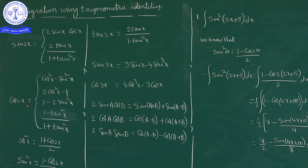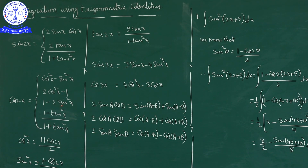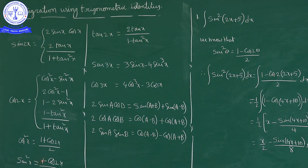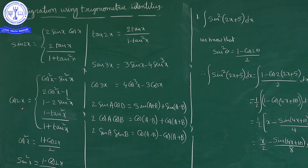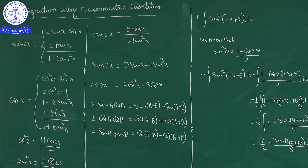Similarly, cos 2x in terms of sine is 1 minus 2 sin²x. From here, sin²x equals (1 minus cos 2x) / 2. Rearranging gives 2 sin²x equals 1 minus cos 2x, so sin²x equals (1 minus cos 2x) / 2.